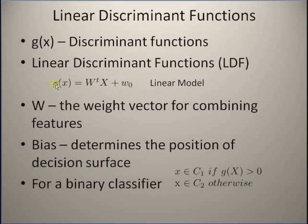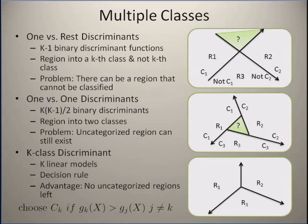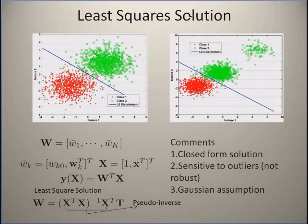We want to find the w's that minimize the difference between this function's values and the actual target values. The solution is given by the pseudo-inverse of the data matrix X multiplied by the target vector t — a very familiar result used in linear regression. So linear classification using least squares has the same mathematical structure as linear regression.